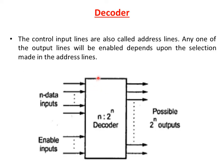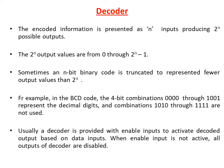Here is the block diagram representation of the decoder. We will represent it as n to 2-power-n decoder. From here we can see the input has fewer number of bits and the output has 2-power-n number of bits. The input has fewer bits and these input lines are also called address lines. Any one of the output lines will be enabled depending on the selection made in the address lines, and the enable inputs are an optional one. The encoded information is presented as n inputs producing 2-power-n possible outputs, and the 2-power-n output values are from 0 through 2-power-n minus 1.